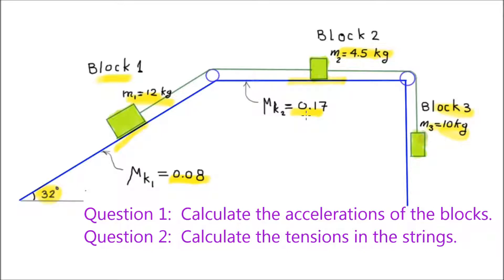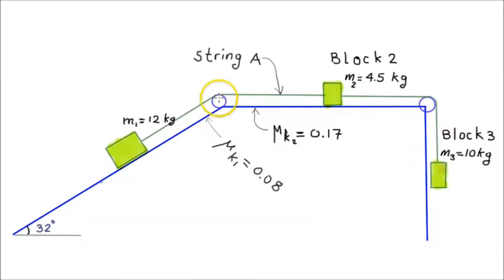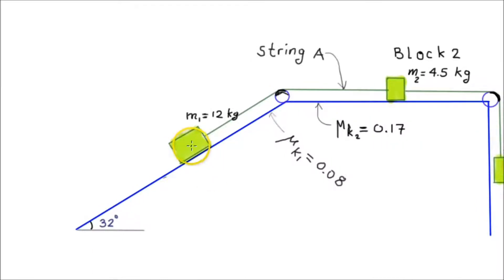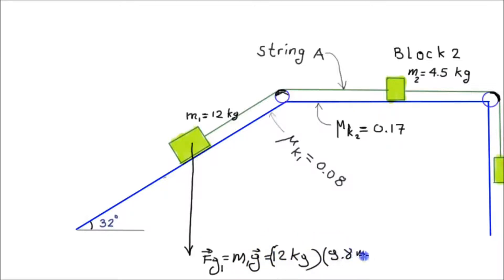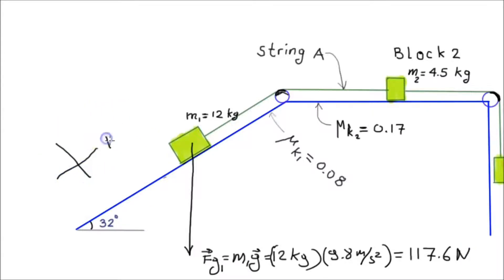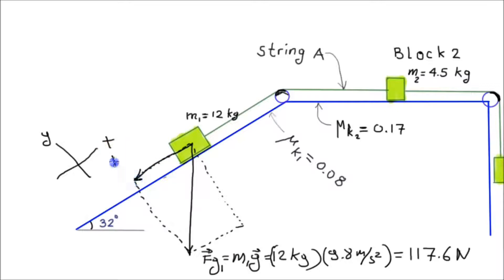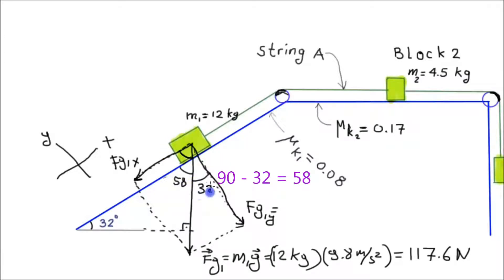Question two: calculate the tensions in the string. Friction between the pulleys and string are negligible. Let's draw the free body diagram of the system. First, draw the free body diagram of block one. This is fg1, the force of gravity acting on block one, so m1 times g: 12 kilograms times 9.8 meters per second squared equals 117.6 newtons. We find the parallel and perpendicular components — parallel to the surface and perpendicular to the surface.